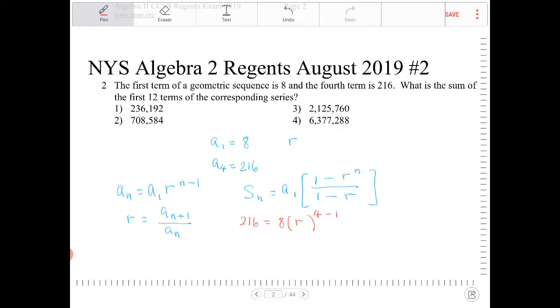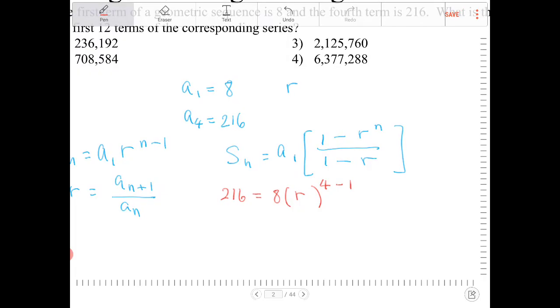So I just substituted everything I know into the geometric sequence equation, and now I'm going to proceed to solve for R. So I'm going to divide both sides by 8 first, and if I do, I will have, what is that,